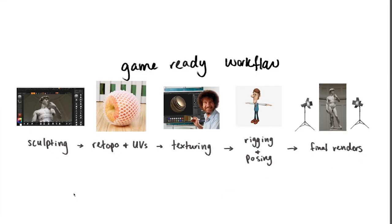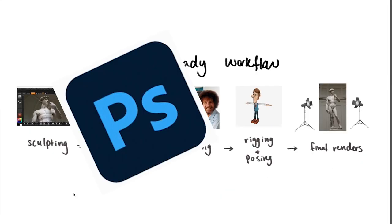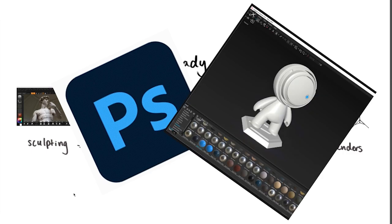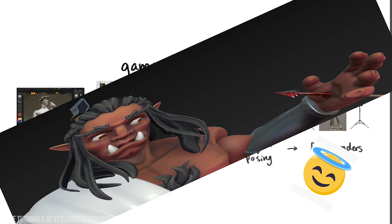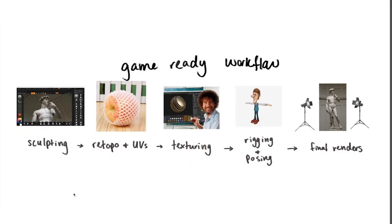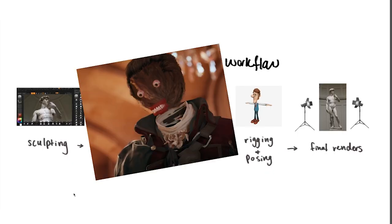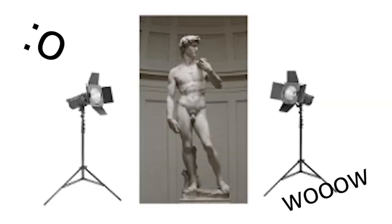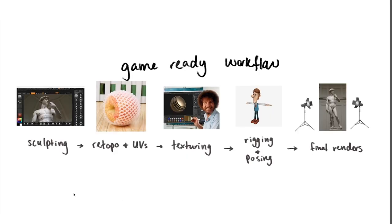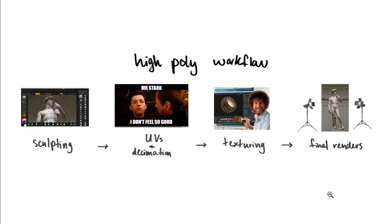Texturing can be done in multiple programs like Photoshop or Substance Painter. I personally like Substance Painter, sometimes with some Photoshop thrown in on the side. Then you go into rigging and posing — you rig it, you weight paint it, and you want to be testing it as you go, making sure that the UV stretching isn't too bad. Then for the final stage you want to do your final renders, and that can be done in any program that you choose.